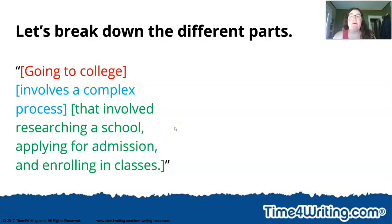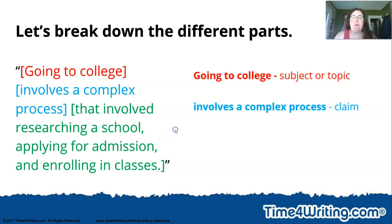So let's break down the different parts. Going to college is my subject. This whole paper is about going to college. My claim, my strong verb, is it involves a complex process. Getting there isn't you can just go I'm gonna go today. It's not how it works.